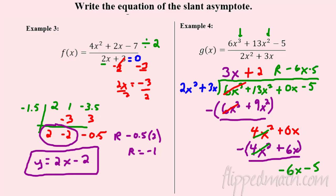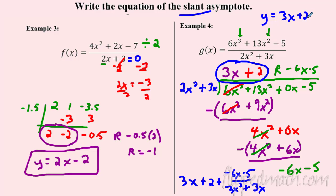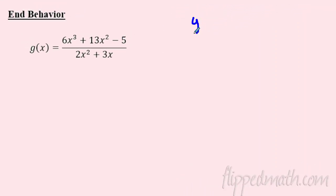If you were practicing full long division, the complete answer would be 3x + 2 with a remainder of (-6x - 5) over (2x² + 3x). But since the instructions ask only for the slant asymptote, I don't care about the remainder — all I care about is 3x + 2. So the slant asymptote is y = 3x + 2.